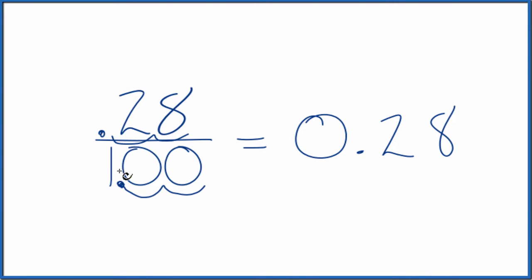Since this is 0.28 over one, we're just dividing by one. It's really just 0.28. You can put a zero in the front if you want. That's what we found before.